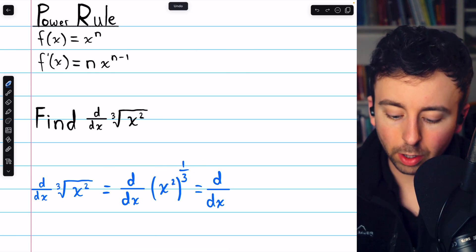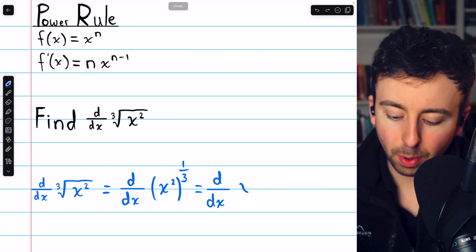x squared to the power of one-third. We can just multiply those exponents together. This is the same as x to the two-thirds.